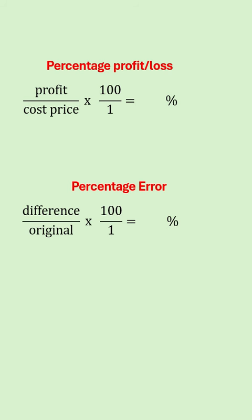To find the percentage profit or loss it's profit over cost price times 100 over 1. For percentage error it's given as difference over original multiplied by 100 over 1.